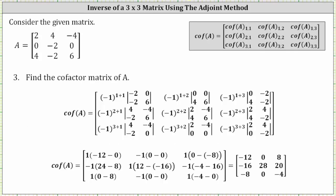For number three, we're asked to find the cofactor matrix. Because we have a three by three matrix, the cofactor matrix requires finding nine cofactors. Cofactor one comma one is equal to negative one raised to the power of one plus one times the corresponding minor. The minor is the determinant of the matrix after eliminating row one and column one, giving a two by two matrix where row one is negative two, zero, and row two is negative two, six.